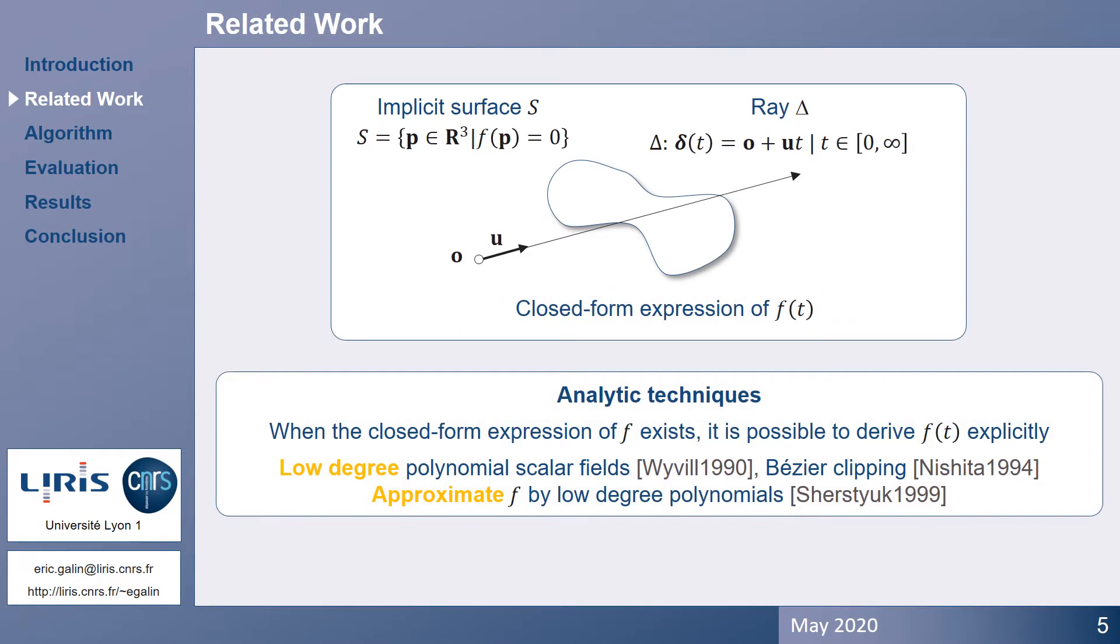Several techniques have been proposed for computing the ray-implicit surface intersection. Here, we briefly review different approaches. Analytic techniques aim at computing the piecewise closed-form expression of the field function along the ray. When f of t is a polynomial equation, solutions, and thus intersections, can be solved analytically for low-degree polynomials, or by using basic clipping. Another solution consists in approximating f of t by a low-degree polynomial to speed-up processing. Yet, this is performed at the expense of less accurate intersections.